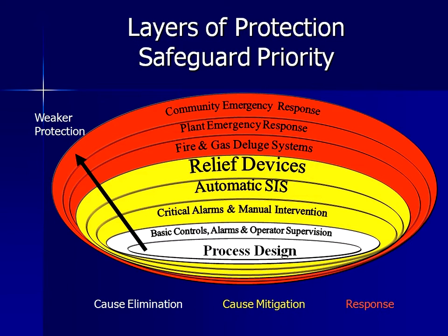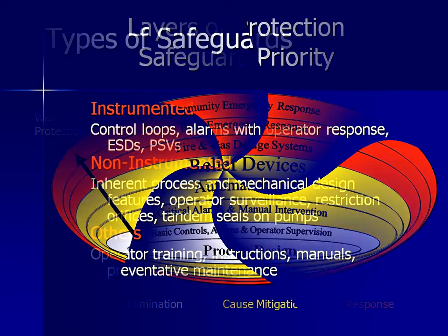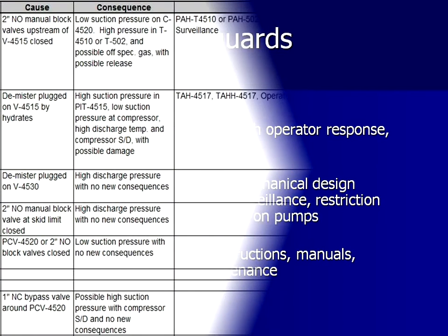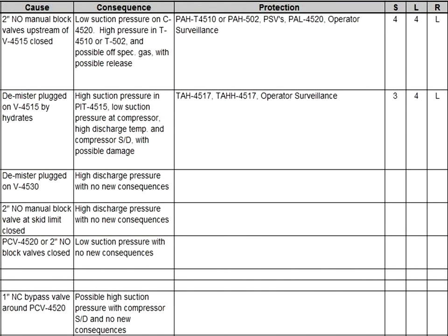Each of these is an additional layer of protection which can collectively prevent accidents. Safeguards include instrumented protection such as control loops and alarms, non-instrumented operator surveillance and mechanical design features, and others such as training and preventative maintenance. Next, we work on ranking the cause, likelihood, and risk.